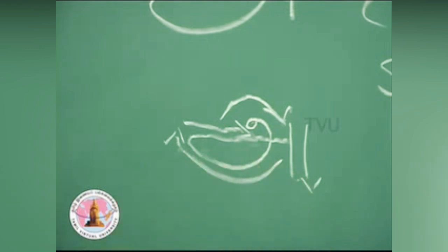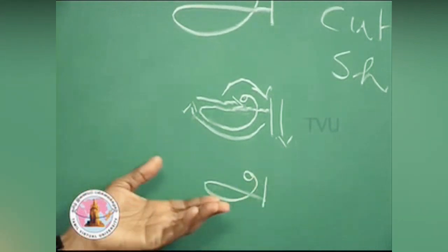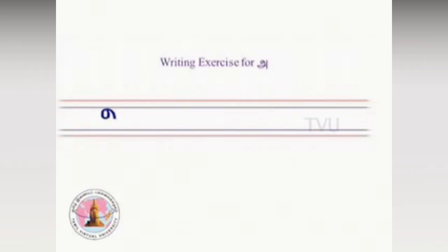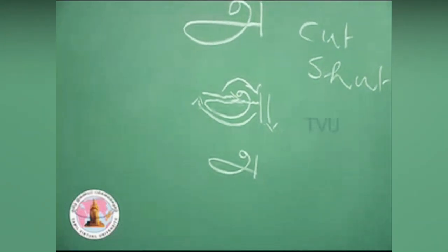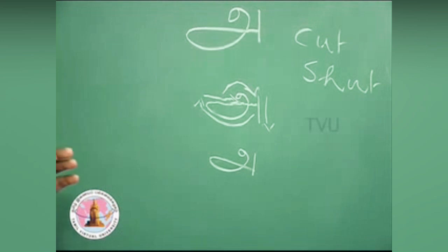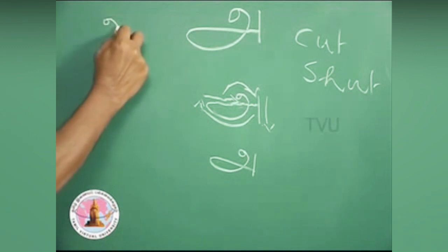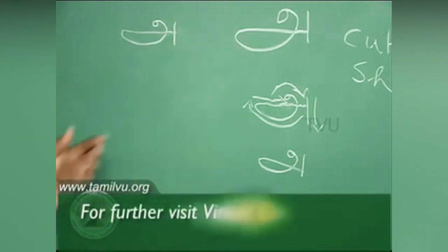Once again we will see how to write. This is the shape. Now you have to practice it so that you will be familiar with the form and the sound. This is a circle — stretch it, go down, extend it and end. This is A.